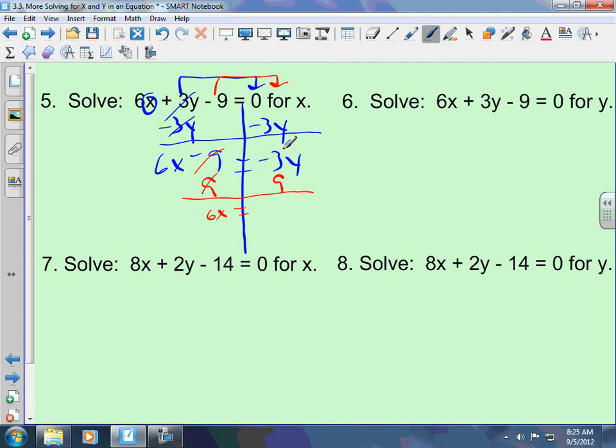This leaves me 6x equals... These cannot be combined. Do not add these and tell me this is 6y. They don't both have y's, so it's negative 3y plus 9. Now, I divide everything by 6. My 6s cancel. x equals negative 3 divided by 6 is negative 1 over 2.